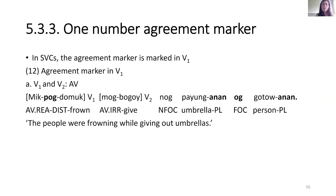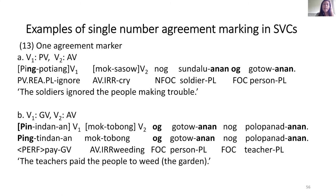In SVCs, the number agreement is marked on V1. In 12a, V1 and V2 are both agent voice; the number agreement marker is on V1, and there is only one focus argument marked by og — you cannot have two og-marked arguments in an SVC. In 13a, V1 is patient voice and V2 is agent voice; the number agreement marker is on V1 with only one focus argument. In 13b, V1 is goal voice and V2 is agent voice; V1 contains the number agreement marker and there is only one focus argument.